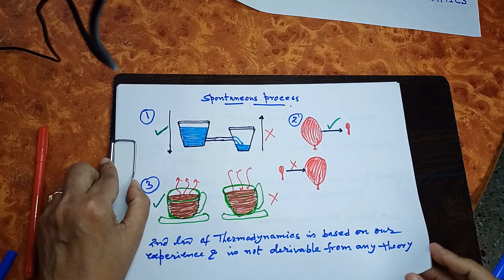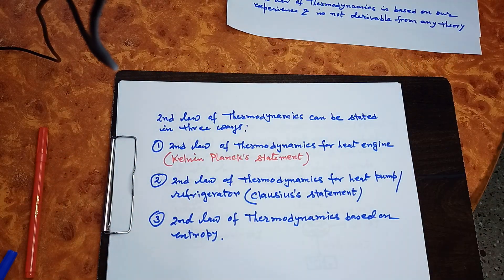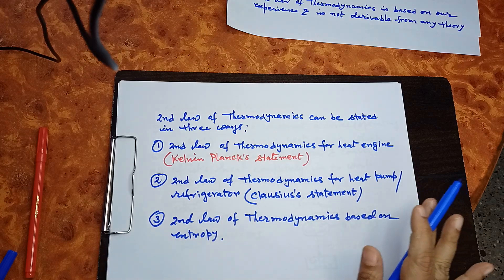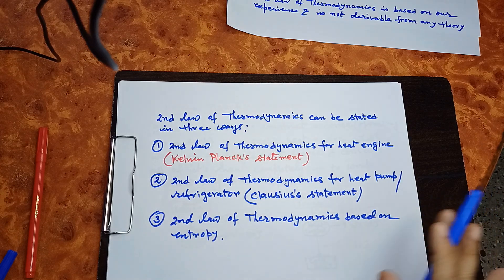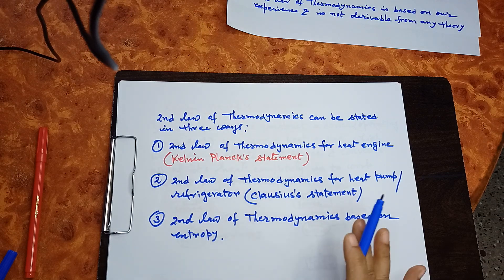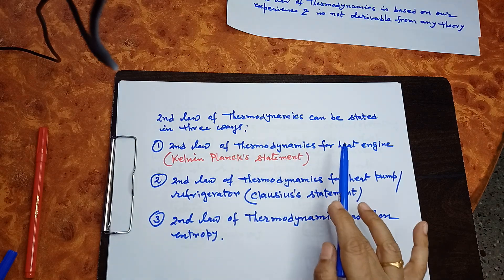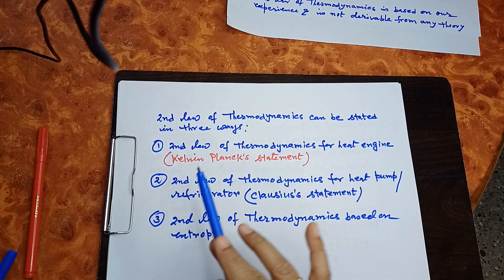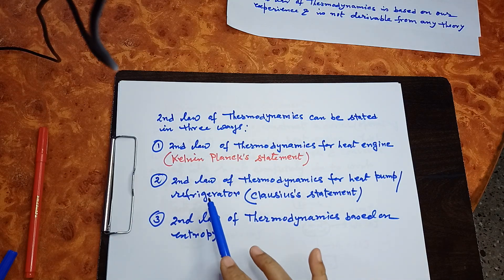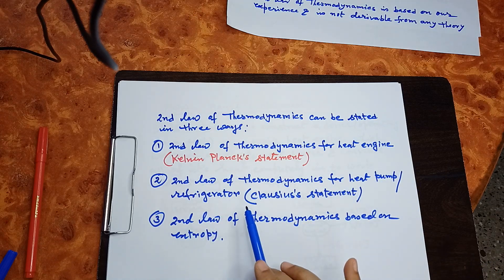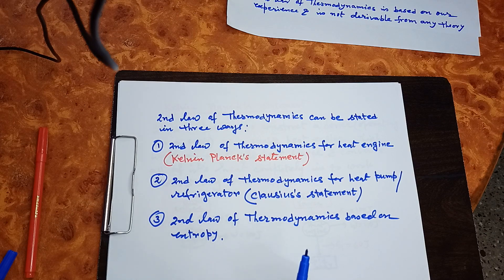All these spontaneous processes — water flowing from high level to low level, heat flowing from hot body to cold body — are also statements of the Second Law because they give the direction of spontaneous processes. The Second Law can be stated in three ways: number one, the Kelvin-Planck statement for heat engines; number two, the Clausius statement for heat pumps and refrigerators; and number three, the entropy-based statement.